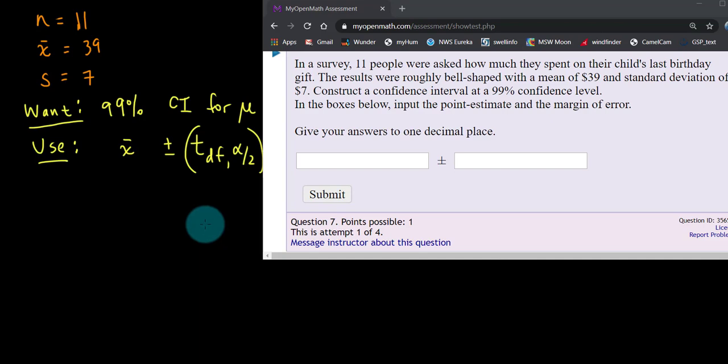In this video we're going to do an example from the homework in experience 8. This is all about a confidence interval for a population mean mu. This is number 7.